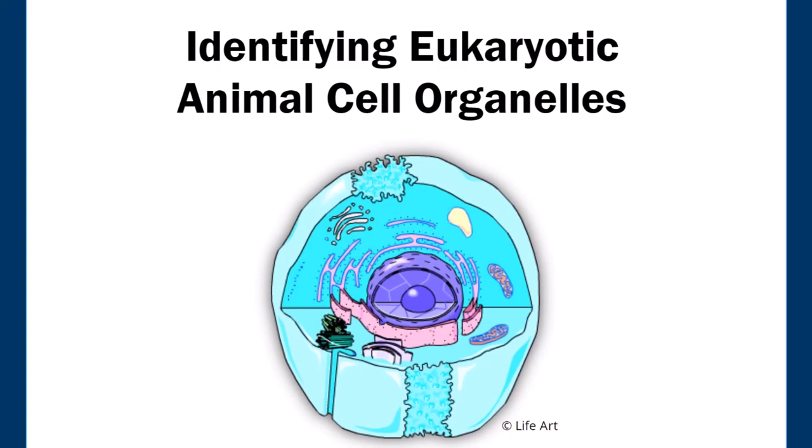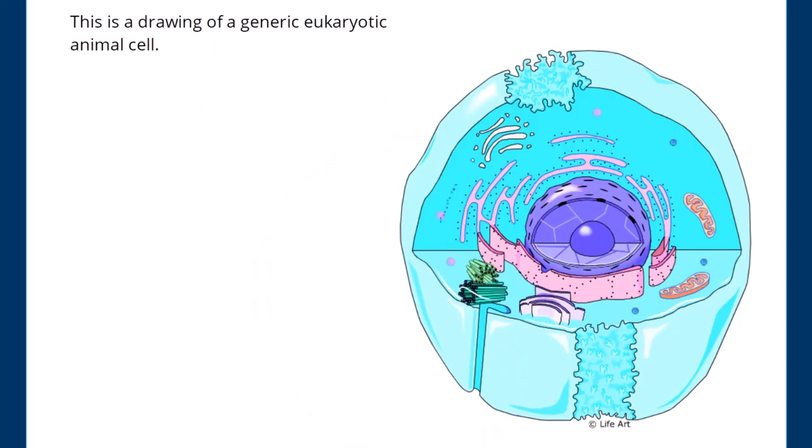Welcome to this module on Identifying Eukaryotic Animal Cell Organelles. This is a drawing of a generic eukaryotic animal cell.